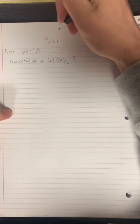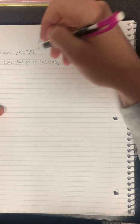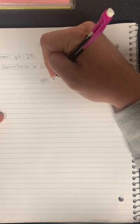Alright, so this is problem 15.4.1 and we are trying to find the concentration of Ca(OH)2. Now we're given the pH, so first we have to find the POH. What we do is 14 minus the given pH.